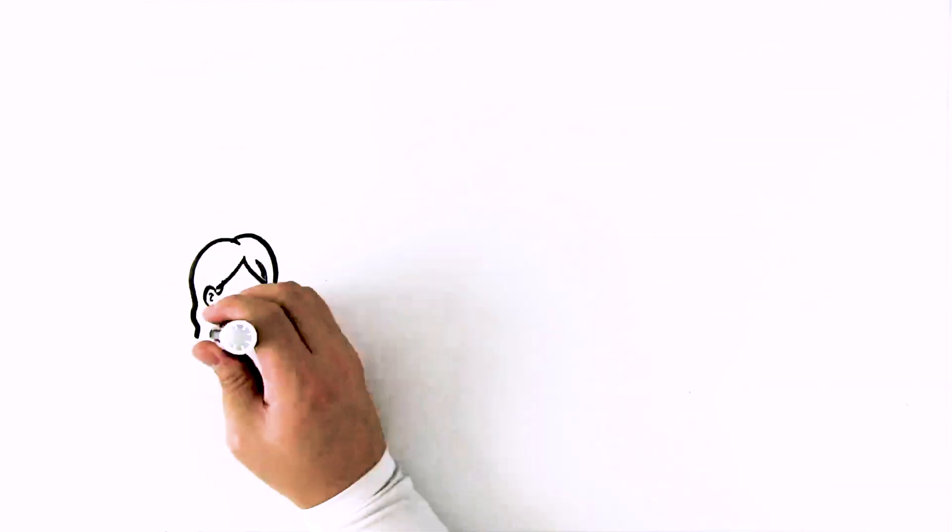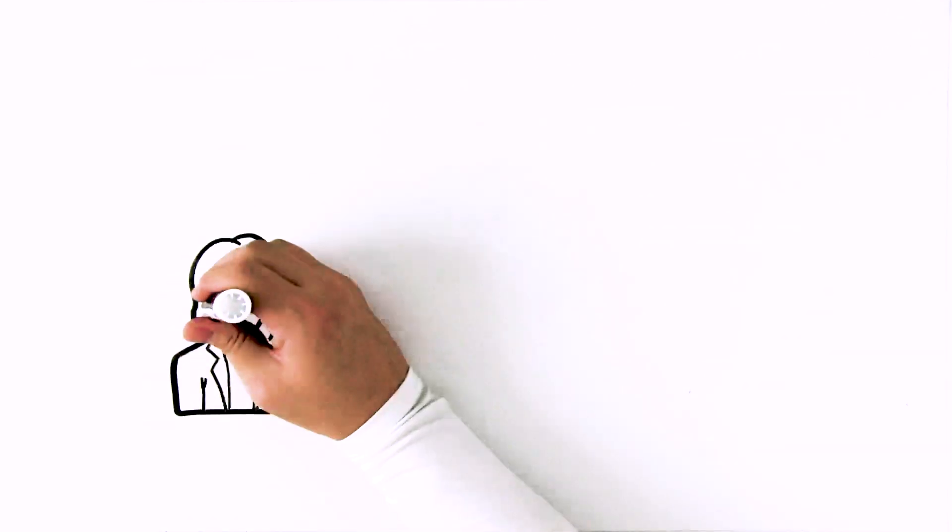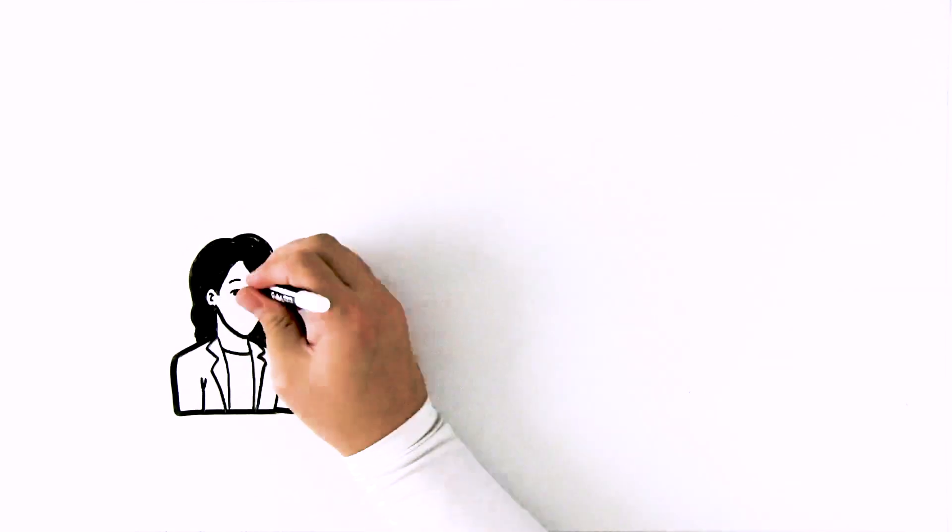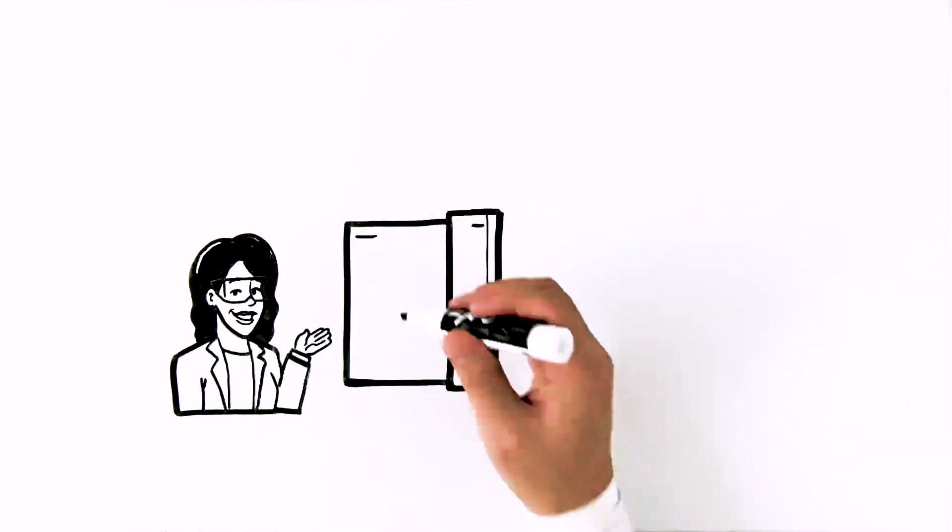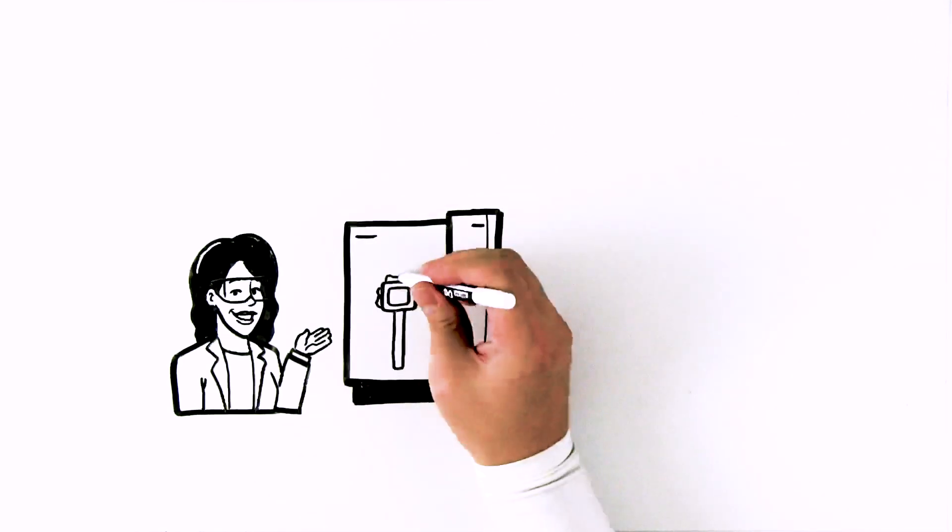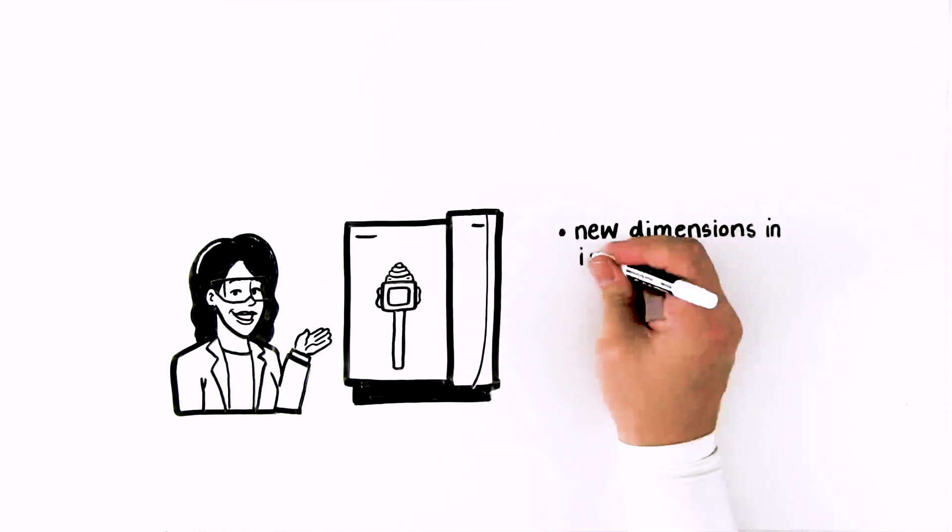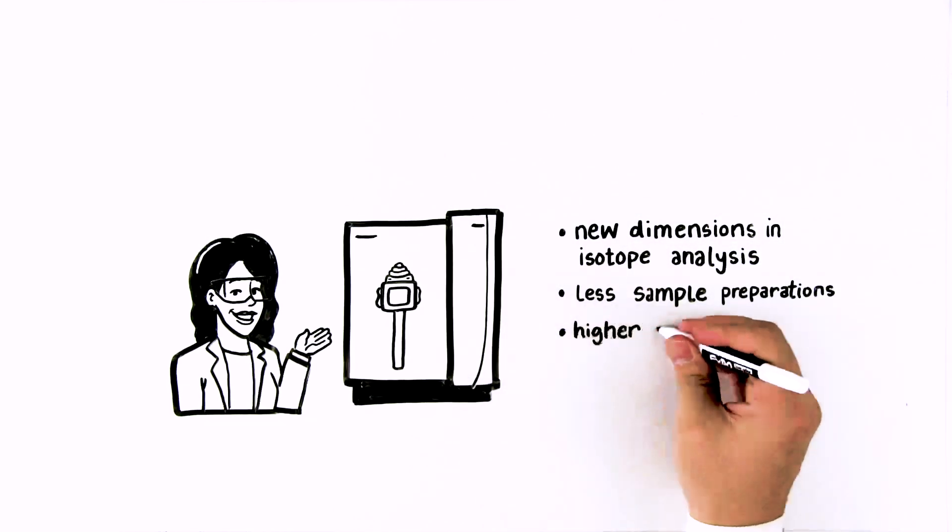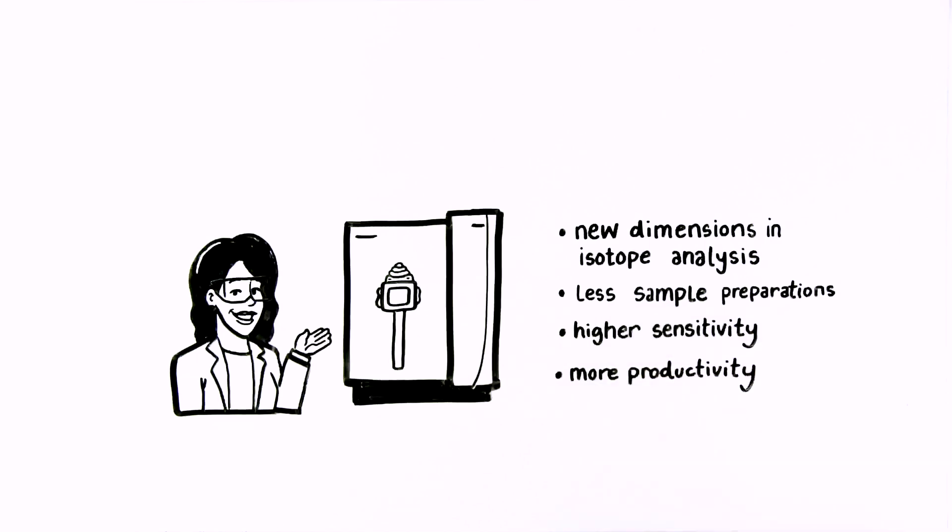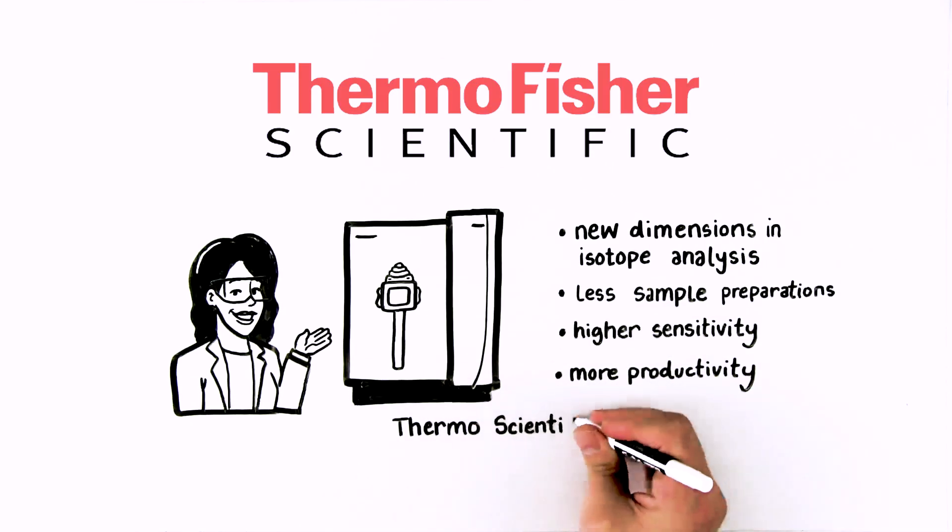With Orbitrap Explorers Isotope Solutions, you can derive intramolecular isotopic information from your samples and determine previously inaccessible isotopologue relative abundances. Open new dimensions in isotope analysis with less sample preparation, higher sensitivity, and more productivity. See the complete picture with Orbitrap Explorers Isotope Solutions.